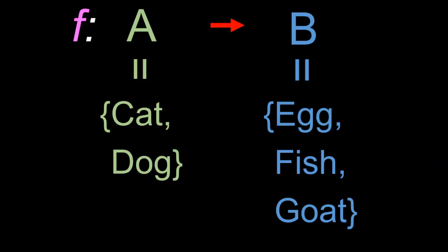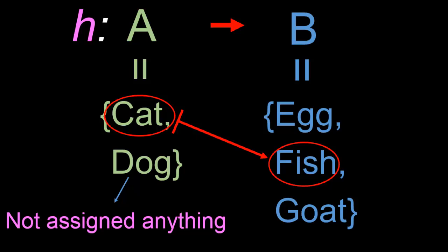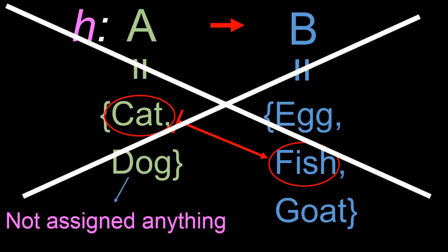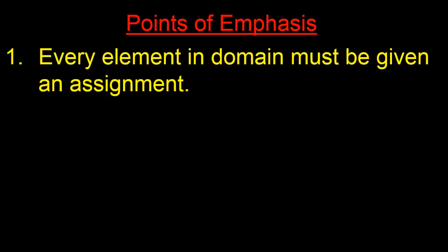In contrast, suppose that we have instead a function called h. h again assigns cat to fish. However, this time the function h will not assign dog to any element in the co-domain B. In this case, h is in fact not a function at all. This is because it fails to assign each and every element in the domain to some element in the co-domain.